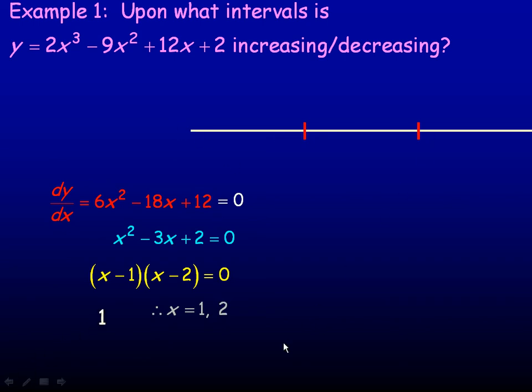So on my number line, I'll place the 1 and 2. It's broken the number line or the x-axis down into three intervals: to the left of 1, between 1 and 2, and to the right of 2. At 1 and 2 is where the derivative of course is 0.